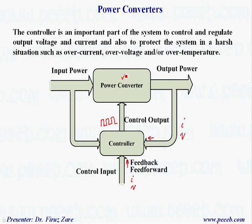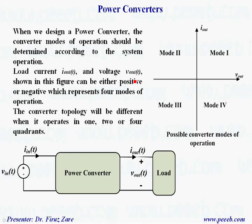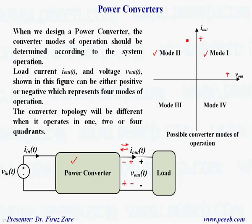When we design a power converter, it's quite important to understand the converter modes of operation — we have to know the output current and voltage. For example, in some applications we need positive or negative voltage, and sometimes the output current should be either positive or negative. The system can operate in different modes: output current positive and output voltage positive; output current positive and output voltage negative; output voltage and current both negative; or output voltage positive and output current negative.